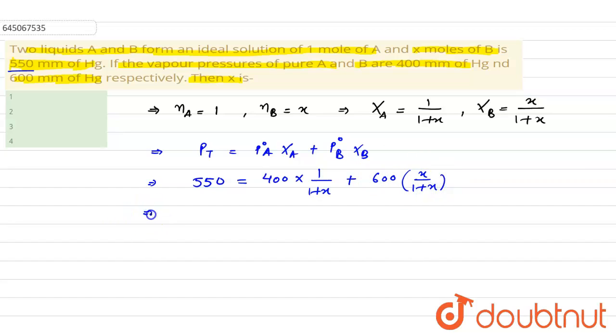Now, we can also write it like this: 550 into 1 plus x is equal to 400 plus 600 x. On further solving it, we will get 550 plus 550 x is equal to 400 plus 600 x.